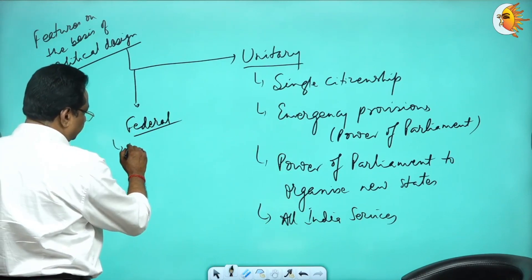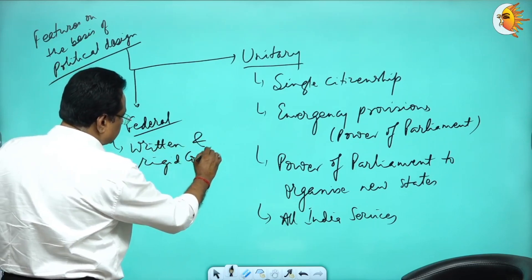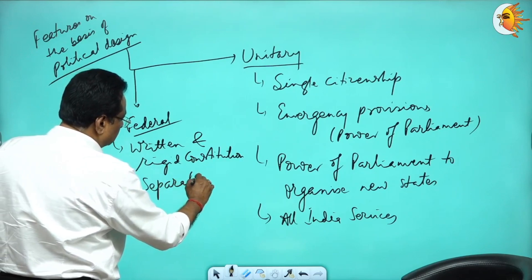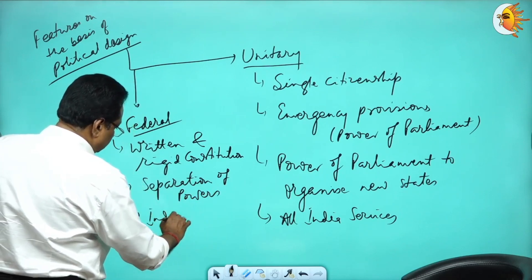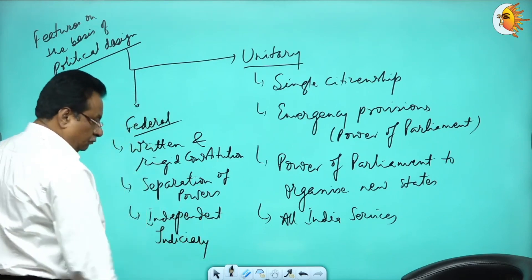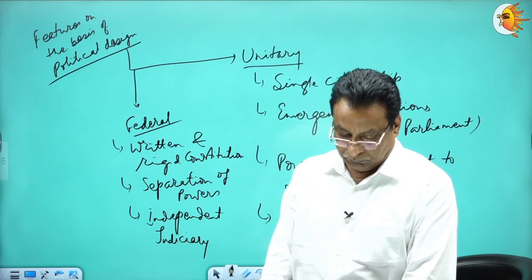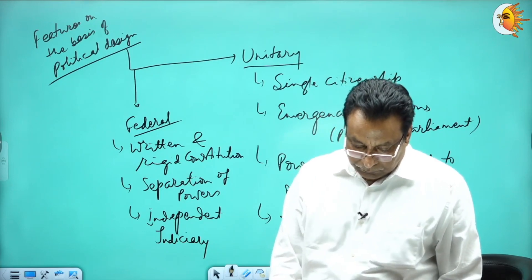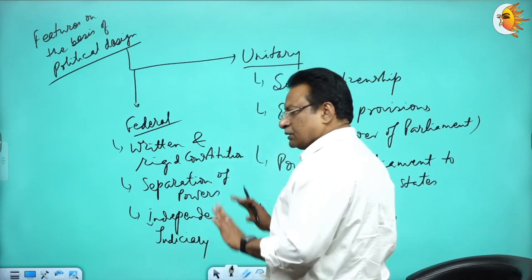Federal features are: written and rigid constitution, distribution of powers, independent judiciary, and bicameral legislature. These are the prominent features which we can classify that way.